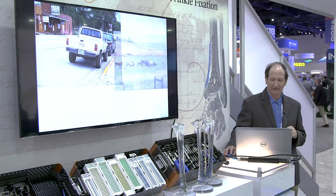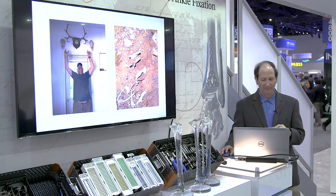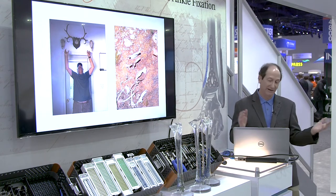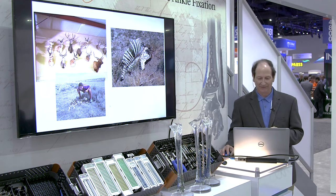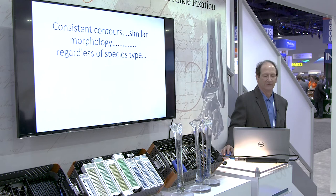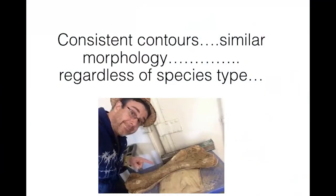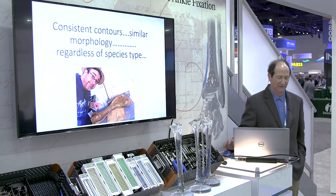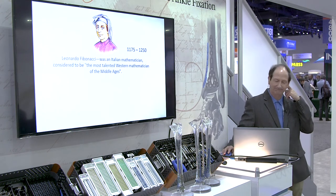I grew up in a rural part of northern Wyoming, been around cows and lots of bones my entire life. Finding skeletons and reassembling them has been a kind of morbid hobby — I've got a lot of skeletons in my closet. Even my daughter was totally into that. What I noticed looking at all these bones is they have consistent contours and similar morphology — whether it's a bobcat, coyote, horse, deer, or moose, the morphology is incredibly consistent regardless of species.